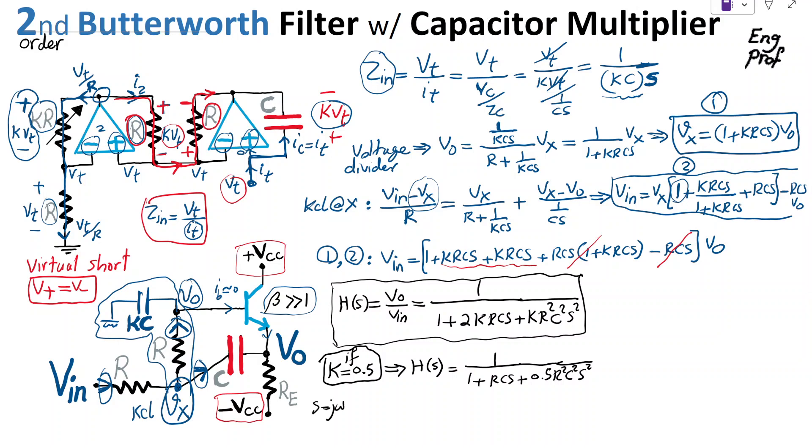As a result, H of omega becomes one over one minus 0.5 RS square CS square omega square, that's the real part of the denominator, plus jRC omega. If you're interested in finding the magnitude response of this thing, naturally you get something like this.